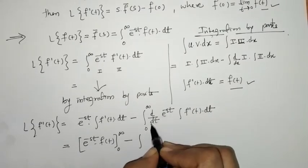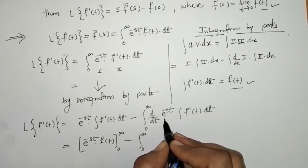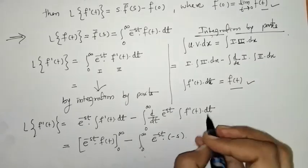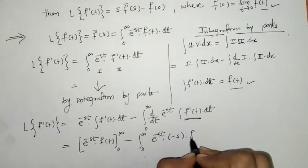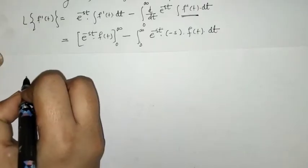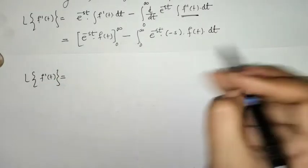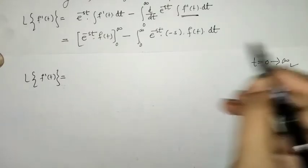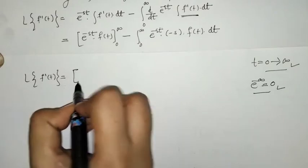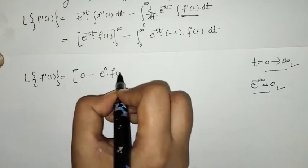Now, the derivative of e raised to minus s t with respect to t — where s is a constant — is e raised to minus s t times minus s. So we have e raised to minus s t into f of t evaluated from 0 to infinity, minus the integral term. For the upper limit, e raised to minus infinity is 0, and for the lower limit we have e raised to 0 into f of 0.